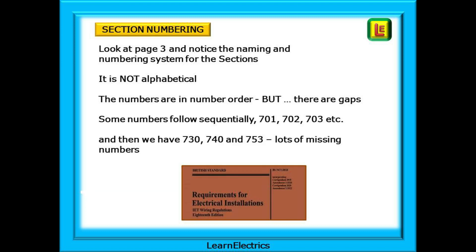Now go back to page 3 and look at the section naming and numbering system that is used. The first thing to note is that it is not alphabetical. And then the numbers appear to be in number order, but on closer examination there are gaps in the numbers. Some numbers are sequential, 701, 702, etc. But there are also some big gaps, jumping from 730 to 740 to 753. There is nothing that you can do, just be aware when searching for a particular section.